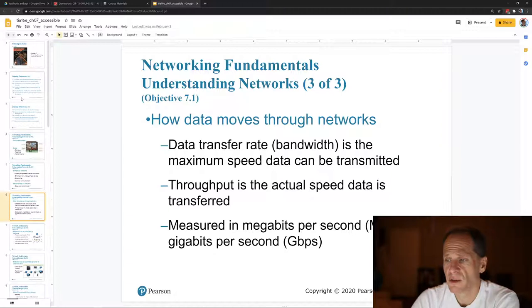How data moves through networks, we've got the bandwidth, right, the maximum speed at which data can be transmitted. Throughput is the actual speed data is transferred. And speed is measured in megabits per second or gigabits per second. It's not bytes, it's bits. And so it's a factor of eight less than bytes.